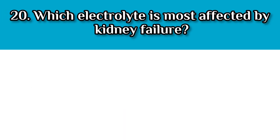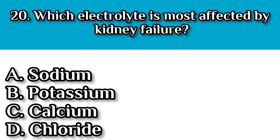Question number twenty: Which electrolyte is most affected by kidney failure? A. Sodium, B. Potassium, C. Calcium, and D. Chloride. The answer here should be B, potassium, because the kidneys regulate potassium levels, and kidney failure can lead to dangerous hyperkalemia. There you have it — 20 questions on the renal system. If you've watched this far, please don't forget to like and subscribe for more videos like this.